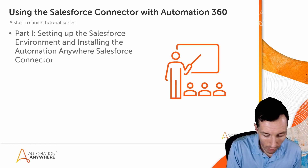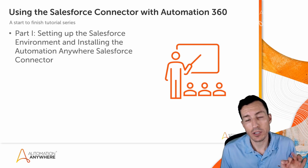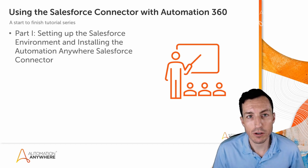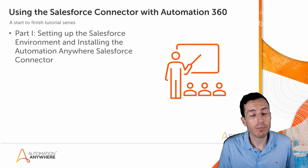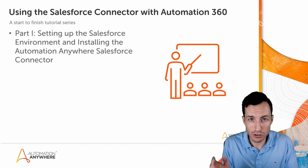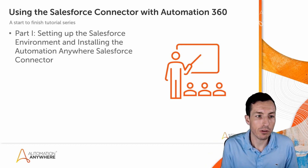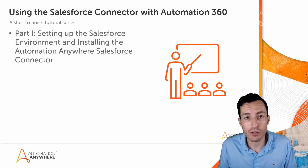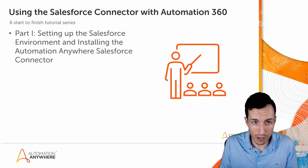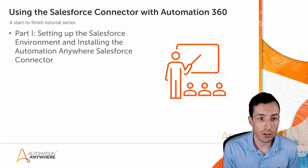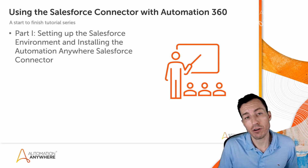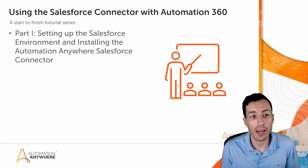We're doing this in three parts. If you have Salesforce experience and a connected app already set up, you can skip some of part one but you'll want to stay for parts two and three. If you have no experience, follow along from the very beginning — we'll register for a Salesforce dev account and set everything up from scratch. Part one covers setting up the Salesforce environment, installing the connector, creating a certificate, a connected app, and a permission set.